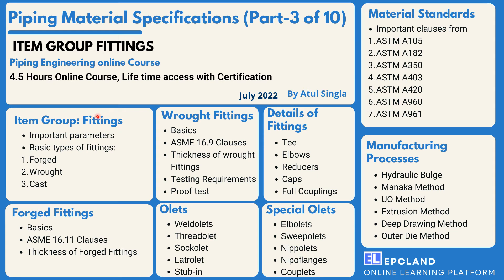In the item group Fittings section, we are going to understand various important parameters: what are the various types of fittings — forged, wrought, cast. We will look into the basics of forged fittings, the concept of ASME B16.11, and thickness of forged fittings. Similarly, for wrought fittings, we will look into ASME B16.9 clauses, thickness of wrought fittings, testing requirements, and proof tests.